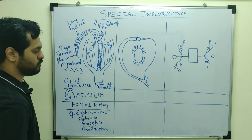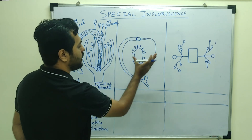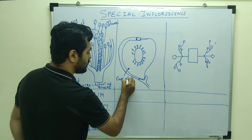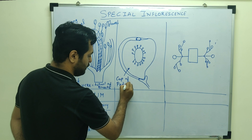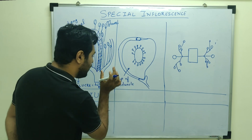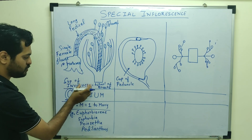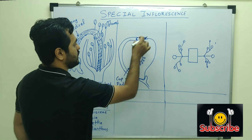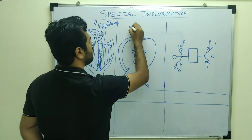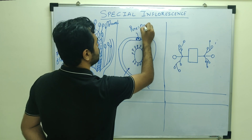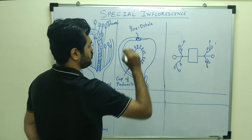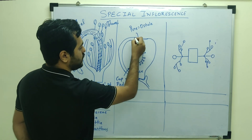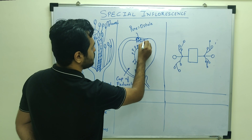Coming to the next special inflorescence — there is another cup-like structure. But this cup is of the peduncle, not of bracts. Here the cup was of the bracts — wall of bracts, that is involucre. And in this peduncle cup-like structure, on the top there is the presence of a pore known as the ostiole.